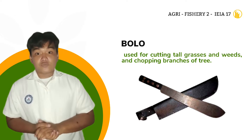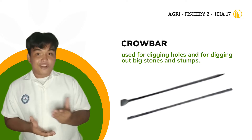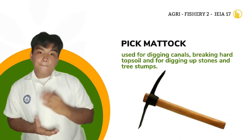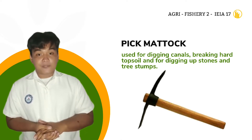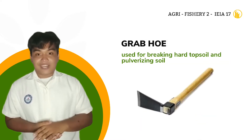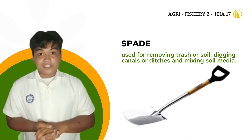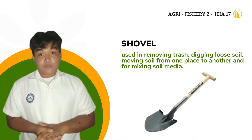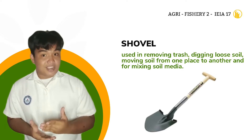Bolo — used for cutting tall grasses and vines and chopping branches of trees. Crowbar — used for digging holes and for digging out big stones and stumps. Pick Mattock — used for digging canals, breaking hard soil, and for digging up stones and tree stumps. Grab Hoe — used for breaking hard topsoils and for raising soil. Spade — used for removing trash or soil, digging canals or ditches, and mixing soil media. Trowel — used in removing trash, digging loose soil, moving soil from one place to another, and for mixing soil media. Rake — used for cleaning the ground and leveling the topsoil.